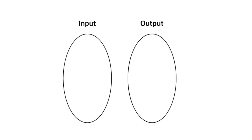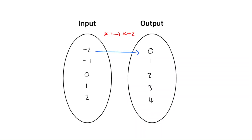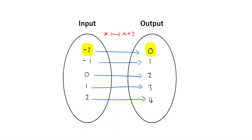Let's say we've got the mapping x is mapped onto x plus 2. Let's take the values negative 2, negative 1, 0, 1, 2 as our input values. They're going to be mapped onto 0, 1, 2, 3, 4, because negative 2 maps onto 0, negative 1 onto 1, 0 onto 2, 1 onto 3, and 2 onto 4. Every input value you just add 2 to get the output value. Each individual input value is mapped onto one and only one output value.